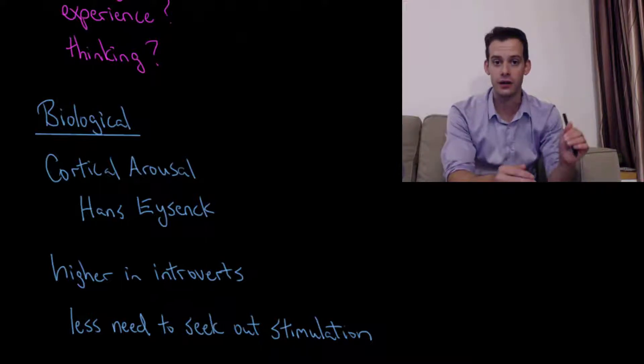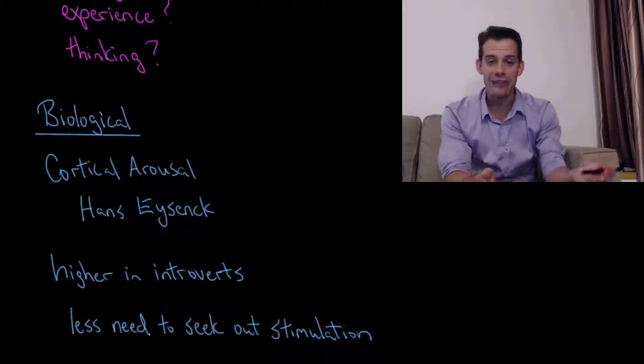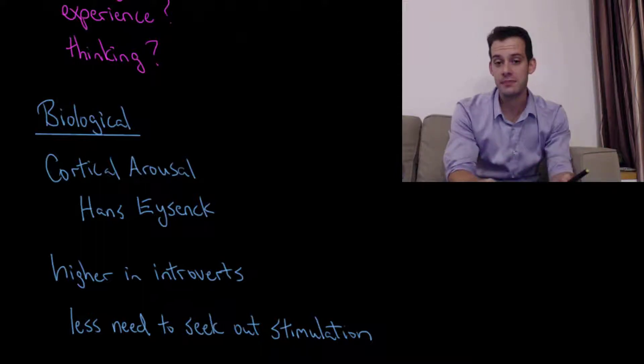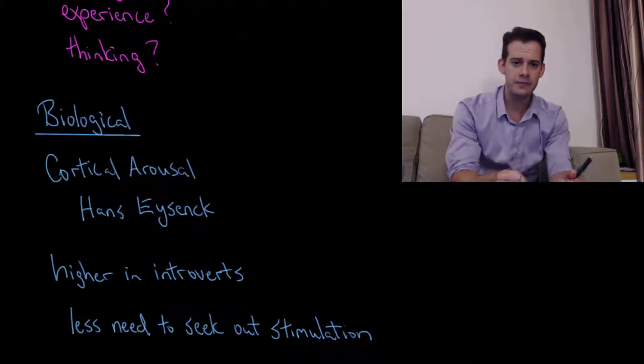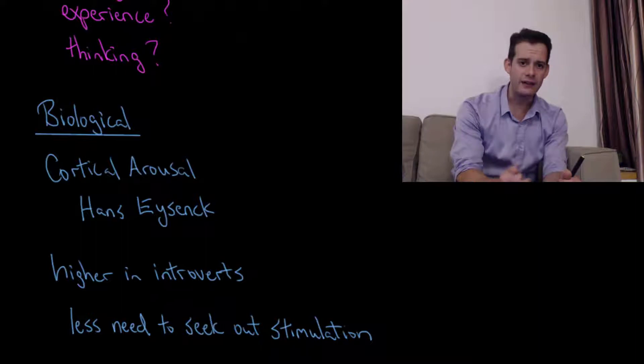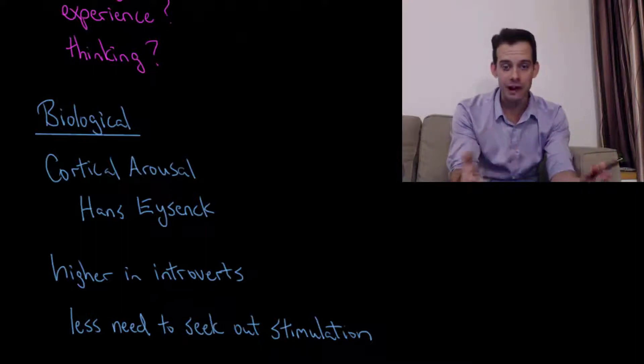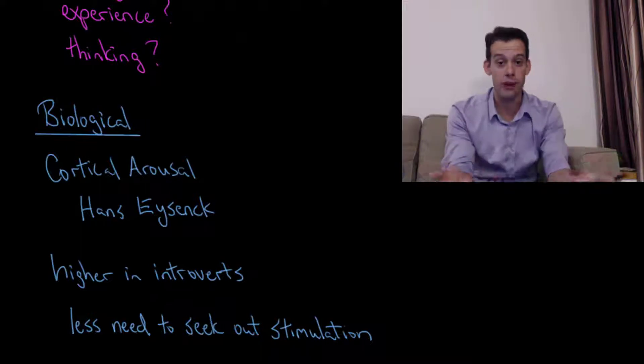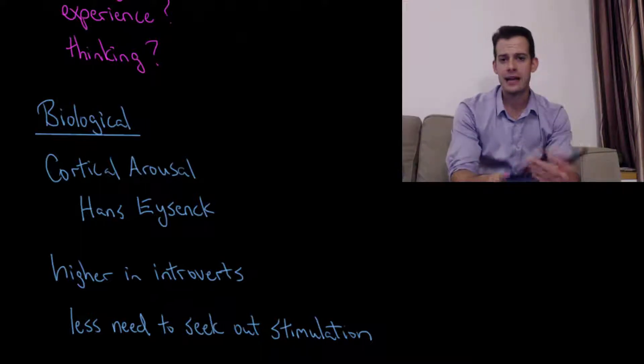So the idea is there's some optimal level of cortical arousal that a person wants to have and if they're introverted they're already at that optimal level so they don't need more stimulation from the environment. Whereas somebody who's more extroverted is at a lower level initially in cortical arousal and as a result they're motivated to get out into the environment and get more stimulation from other people. And so he thought this could explain differences in this trait.